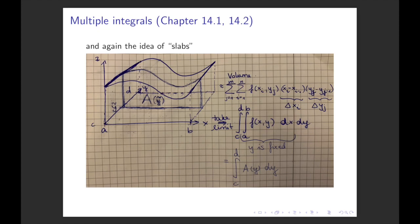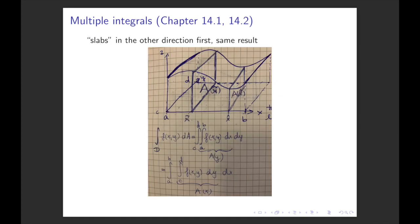Afterwards we take the integral of the function that gives the area of these slabs along the y-axis: the integral from c to d of A(y) dy, where A(y) is the integral we already computed. Of course, we can also do this the other way around — first computing areas of planes that intersect the volume parallel to the yz-axis. That means we first keep x fixed and compute an area depending on x, then afterwards sum up all these areas along the x-axis. In that case the inner integral is from c to d of f(x,y) dy, with x fixed, and afterwards we integrate over x from a to b.